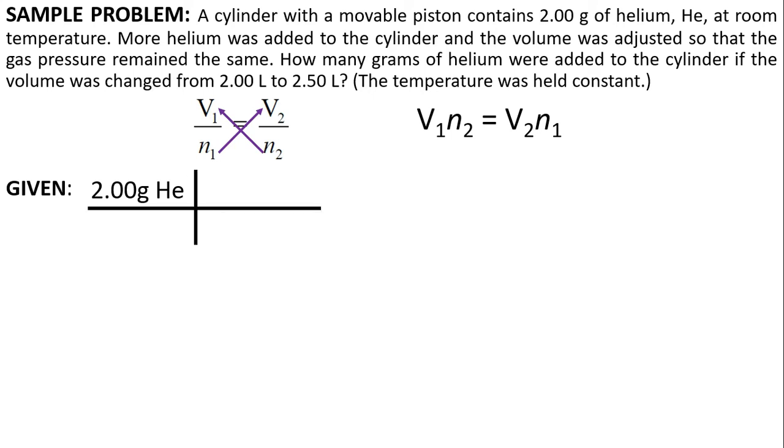Okay? So, 2 grams of helium, by using dimensional analysis, will have the molar mass of helium, which is 4.00 grams, and moles in the numerator. This will give us 0.5 moles of helium, right?